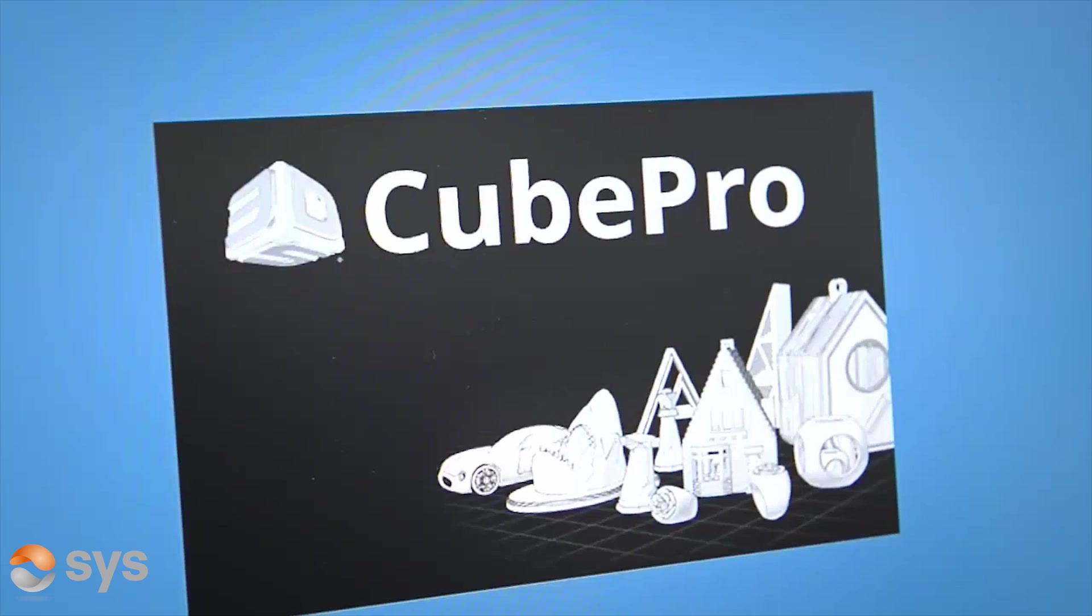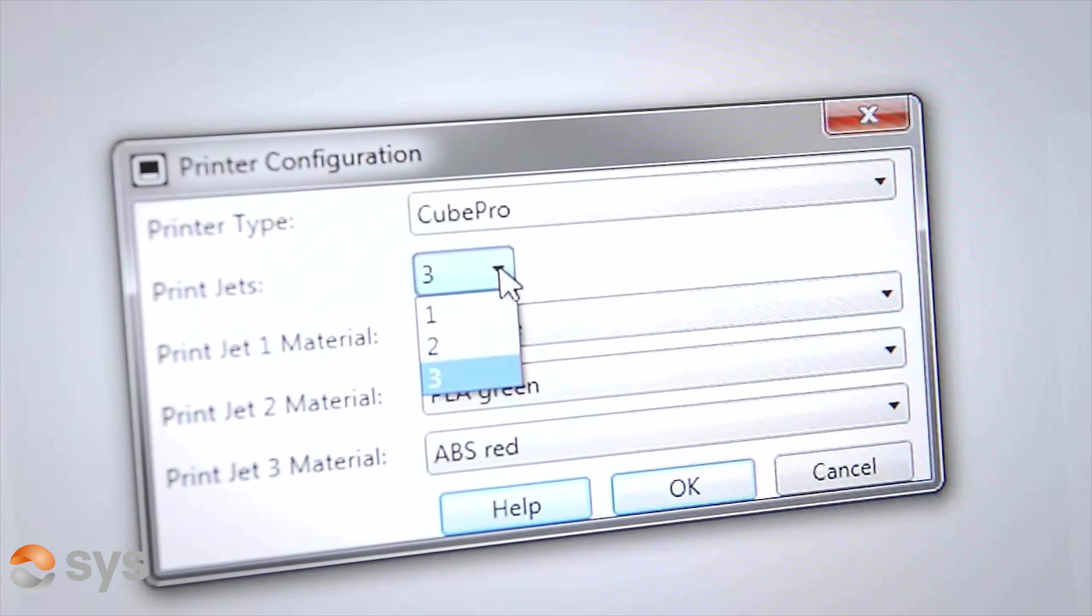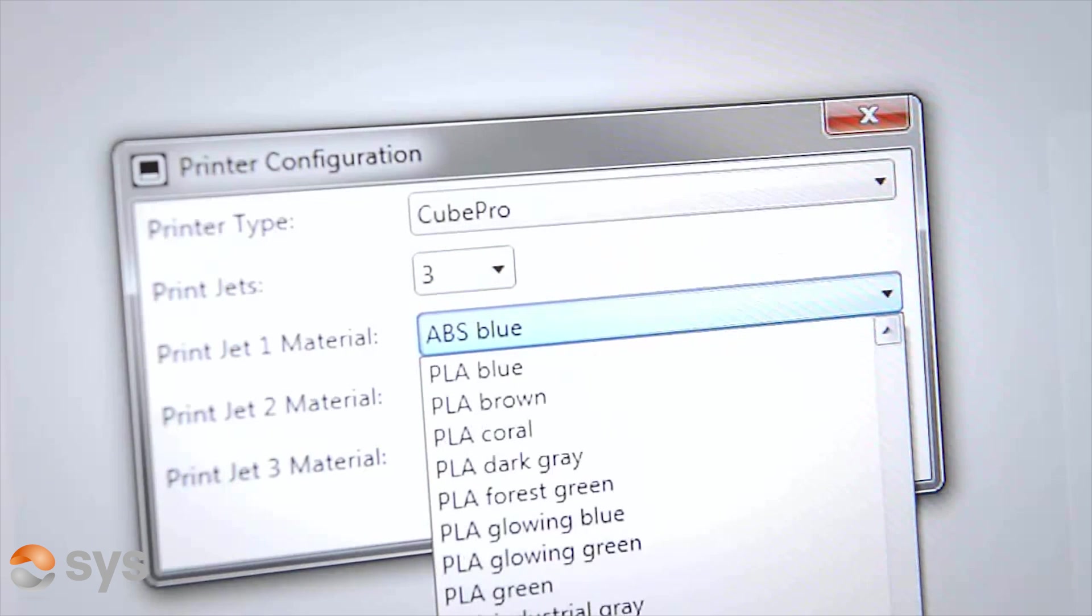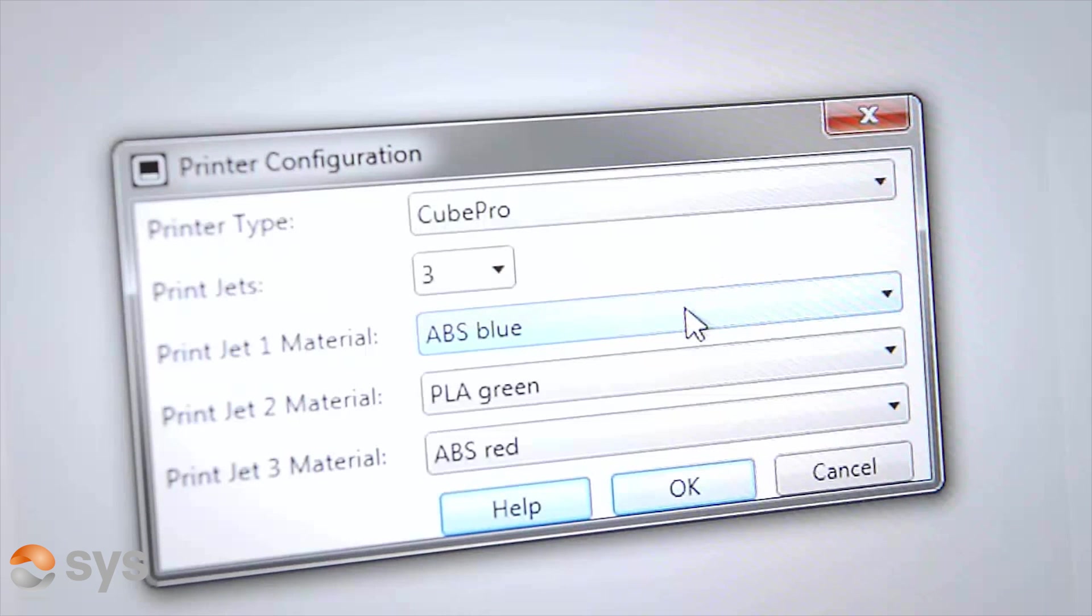Looking at the 3D Systems Cube Pro Trio software, the printed configuration shows that it has three print jets or nozzles as well as the ability to use ABS and PLA materials and clearly has a wider range of colors than the Uprint SE Plus. Note that the Cube Pro uses PLA material as support as opposed to specific special support material with the Uprint SE. It's also worth noting that the Cube Pro has a pop-up caution when using PLA and ABS combinations for the model suggesting a lower print quality if you're going to combine both material types and also suggesting better quality just by selecting one material type such as ABS or PLA.